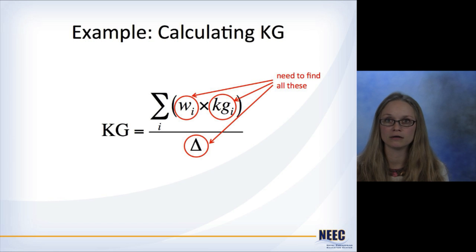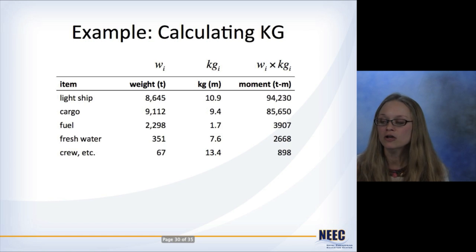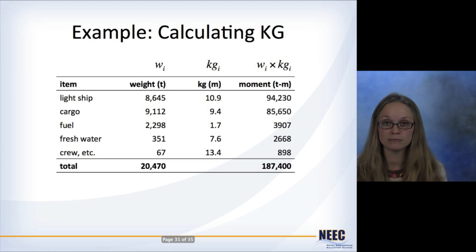So here's a quick example. We go back to our equation here. We need to find these three things to get KG. The easy way to do it is just set up a table. So you have the item, its weight, its center of gravity or KG, and then the moment of the two of them. So you're given these numbers. You've got the lightship, it has this weight and this KG, so you multiply them together to get the moment in the last column. You get cargo, fuel, fresh water, crew, however many things you've got. At the end, you sum these two columns. So now you calculate the total weight of the ship, because it's just the sum of all the individual weights, and then you've summed all of the moments.